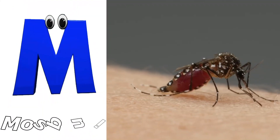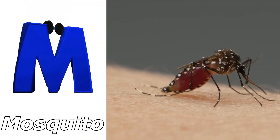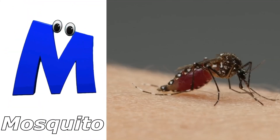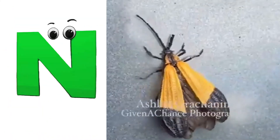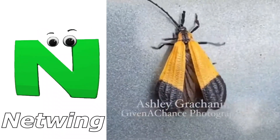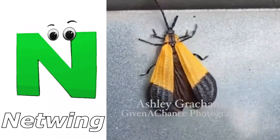M is for Mosquito. M, m, mosquito. N is for Netwing. N, n, netwing.